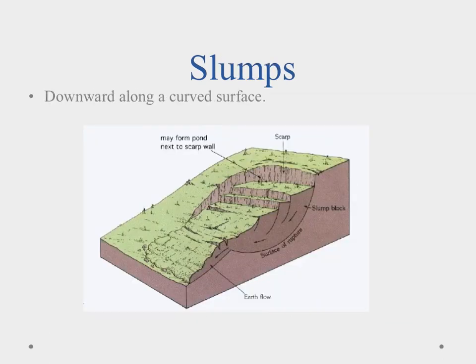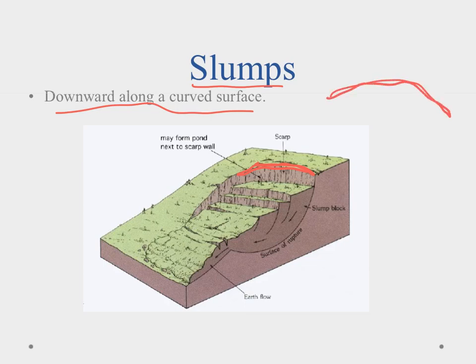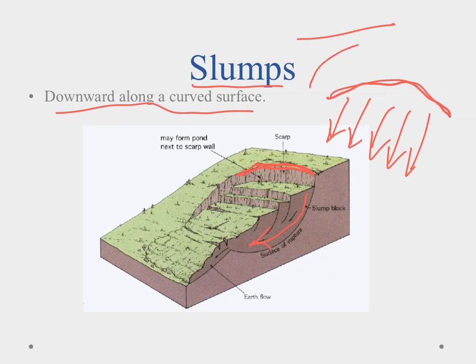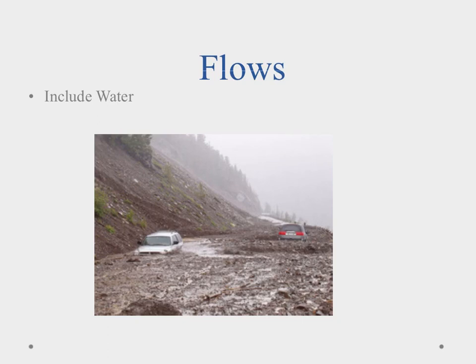A slump is movement downward along a curved surface. You'll notice a crescent shape at the top, and the mass movement material flows down from that crescent. Slides tend to be straight, while slumps are curved — that's how we tell the difference between the two.